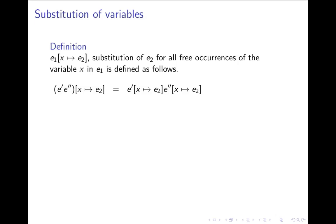This now allows us to define the notion of substitution of variables. E1, where x is substituted by e2, is defined as follows. For an application, it means we substitute x by e2 in e-prime and also substitute x by e2 in e-double-prime. In the case of a simple variable y, the result is y if y and x are not the same variable, because there's nothing to substitute. But if y and x are the same variable, we replace x by e2, so we get e2 when y equals x.